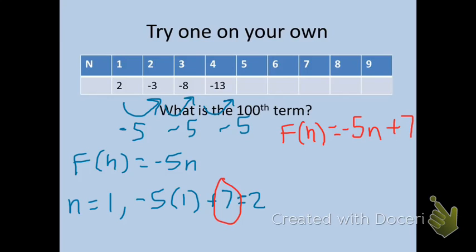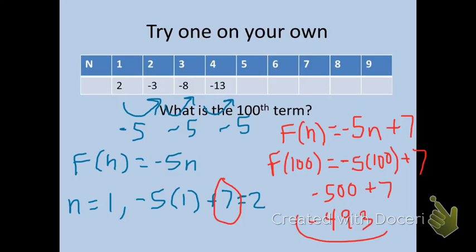If we wanted to figure out the 100th term, we would just plug in 100 in for n. We would get negative 5 times 100 plus 7. Negative 5 times 100 is negative 500 plus 7 would give us negative 493. That's our answer.